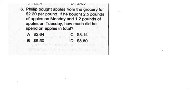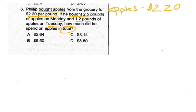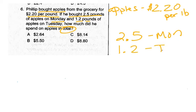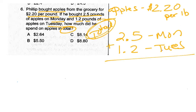Phillip bought apples from the grocery store for $2.20 per pound. If he bought 2.5 pounds of apples Monday and 1.5 pounds of apples Tuesday, how much did he spend on apples in total? What's important here is that he bought apples for $2.20 per pound, he bought 2.5 pounds Monday and 1.5 pounds on Tuesday, and we need to know the total amount spent. The first thing I'm going to do is add the pounds together and get 3.7 pounds.